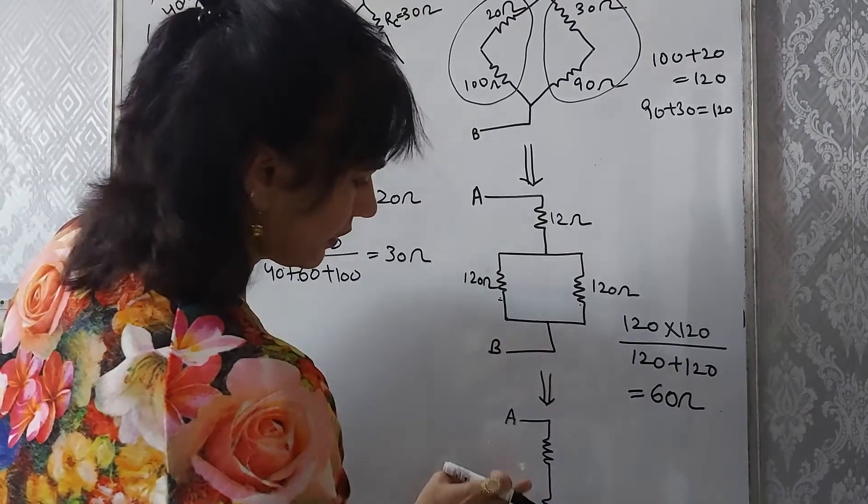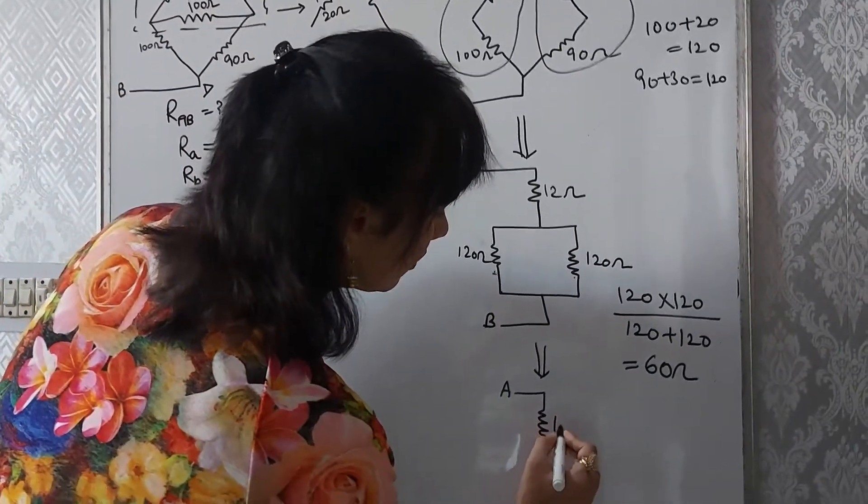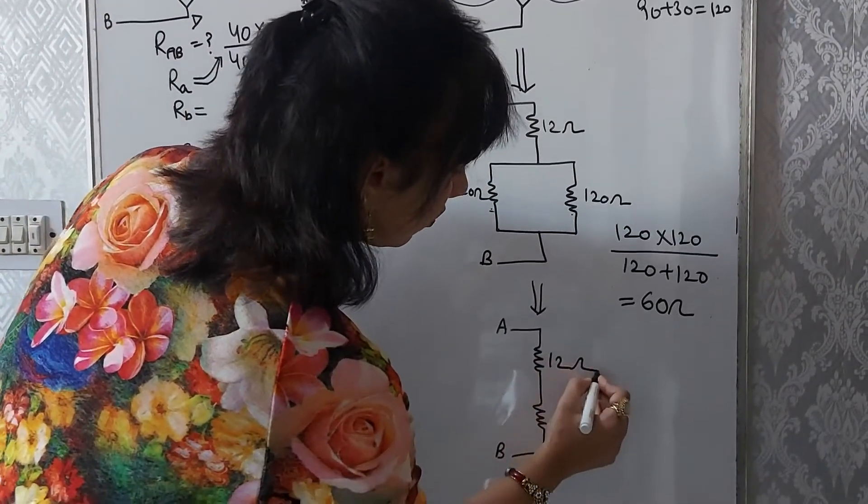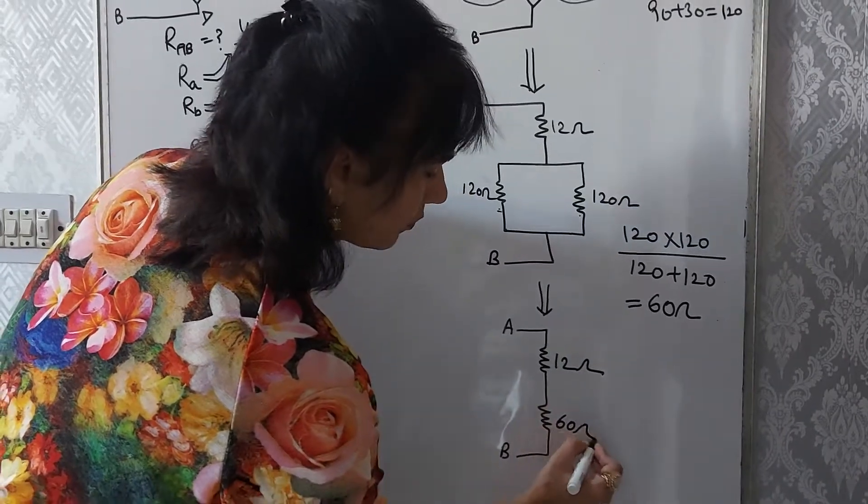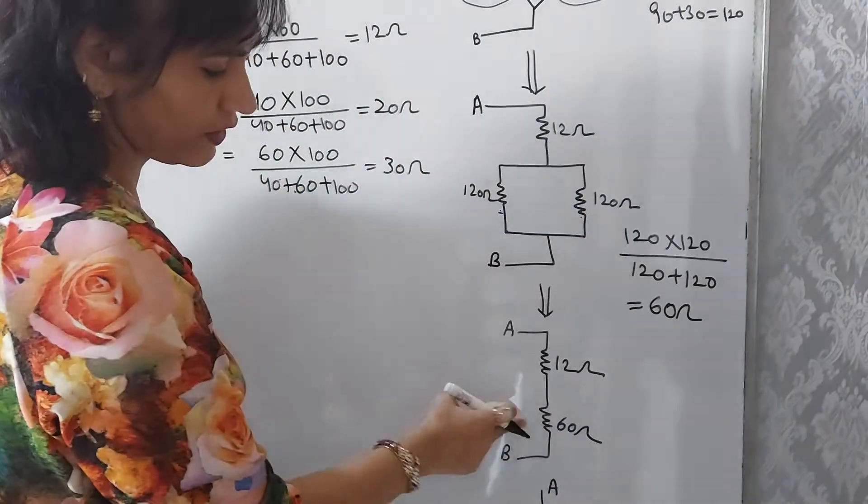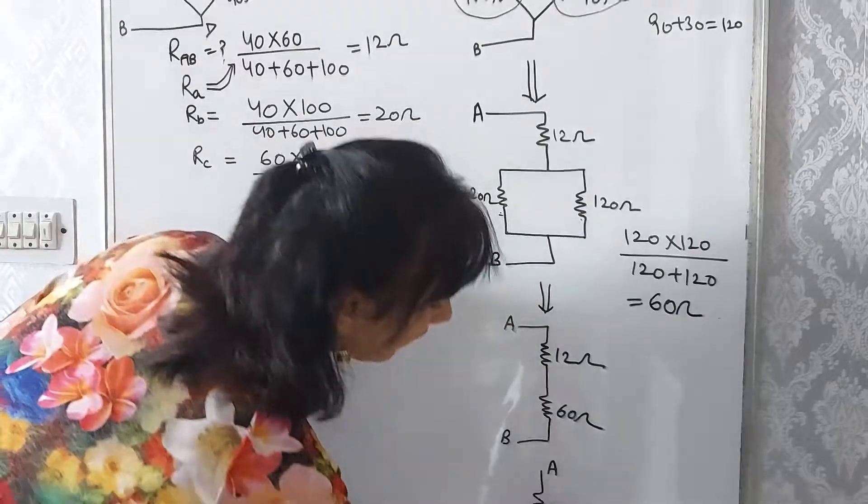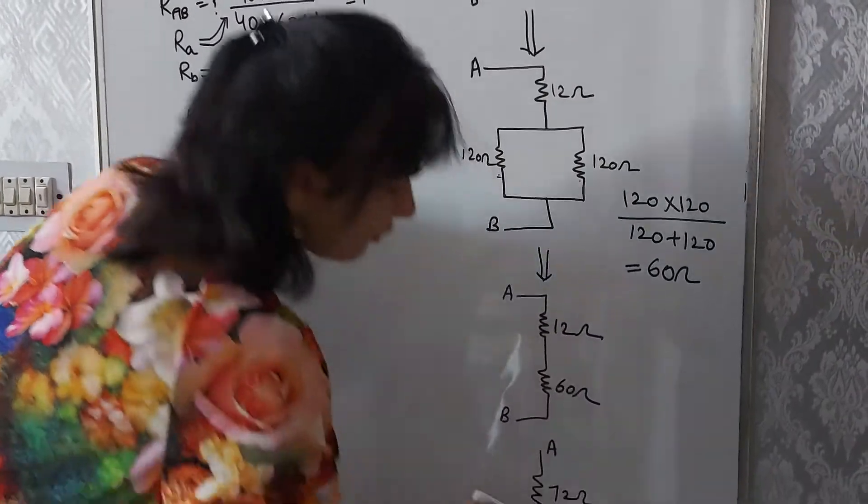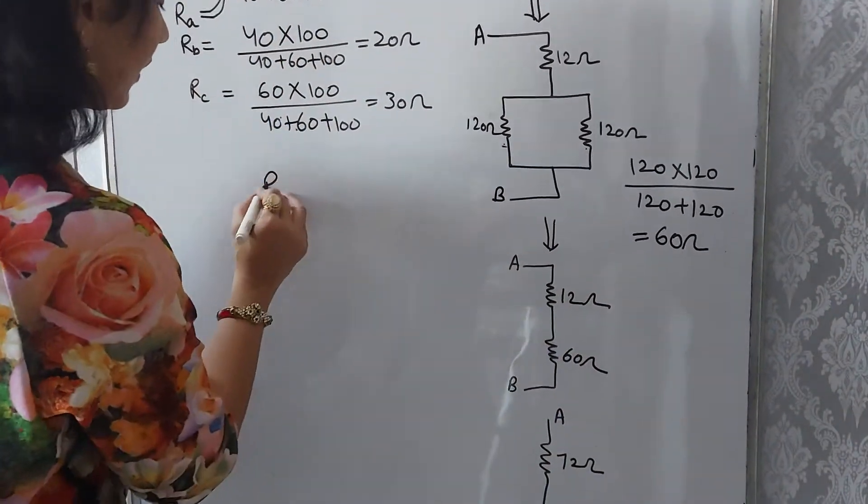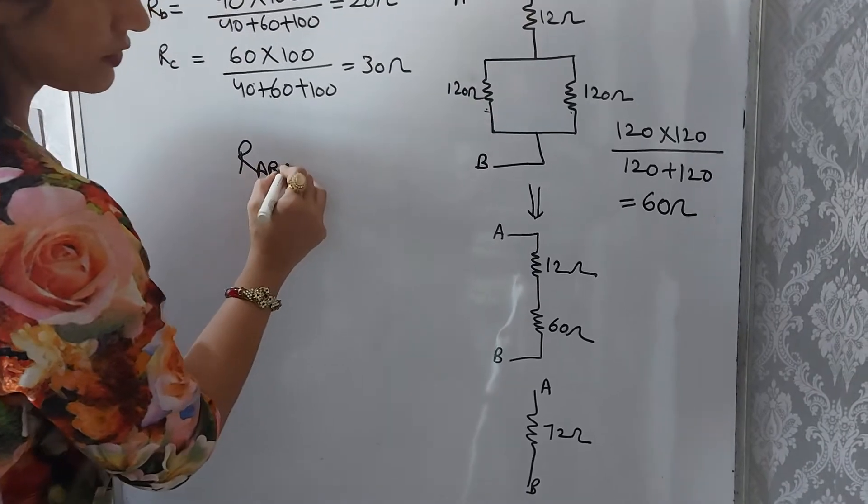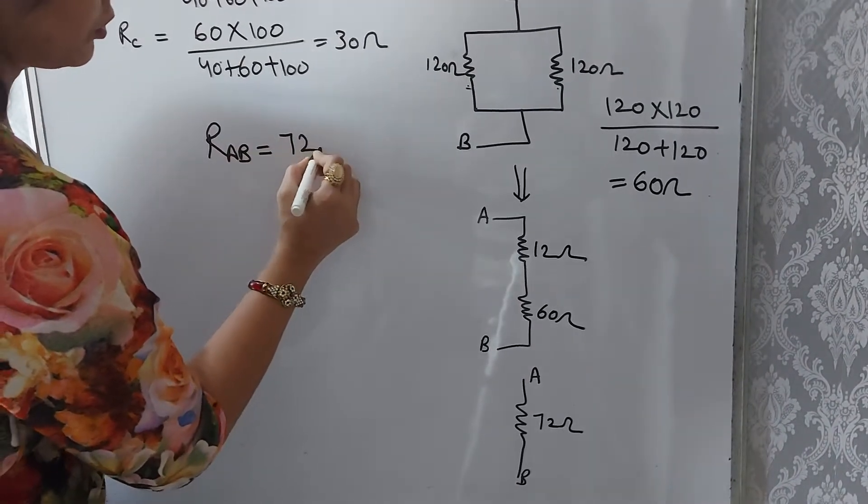Now we redraw this circuit. This will become 12 ohm and 60 ohm. These two are in series, and so finally we will get the final answer: RAB is equals to 72 ohm.